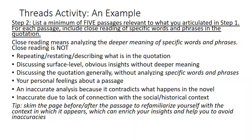Step two: list a minimum of five passages relevant to what you articulated in step one, and for each passage include close reading of specific words and phrases. Close reading means analyzing the deeper meaning of specific words and phrases — it is not simply repeating, restating, or describing what is in the quotation. Your reader can already read the quotation. You also don't want to discuss surface-level obvious insights without deeper meaning — for example, simply observing that a character is being sarcastic. Say more about what the sarcasm means.